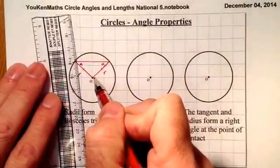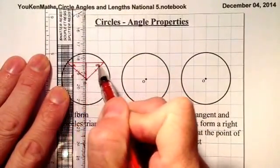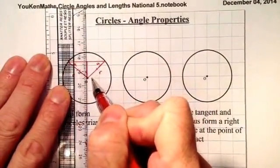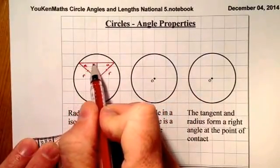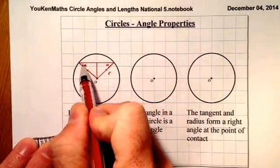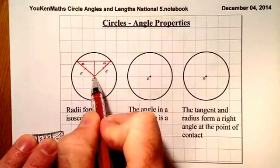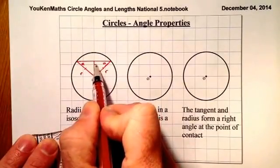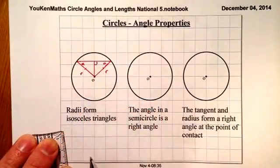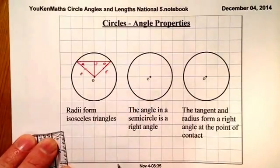Now if I draw a straight line down — this line is called a chord of the circle — wherever the radius meets the chord, it meets at right angles. And again, that's going to be one of the properties we'll be using as we work through this section.